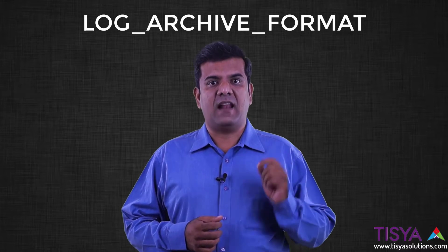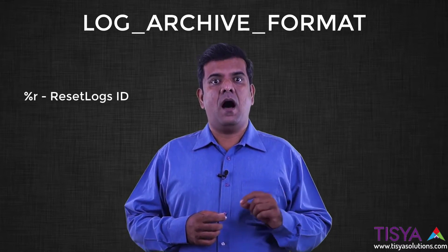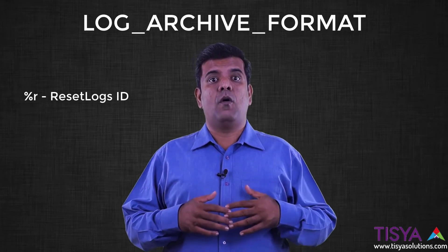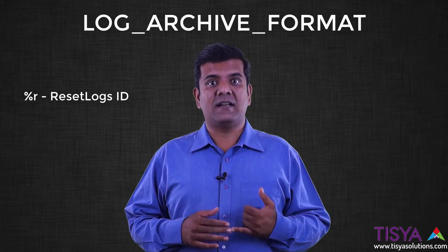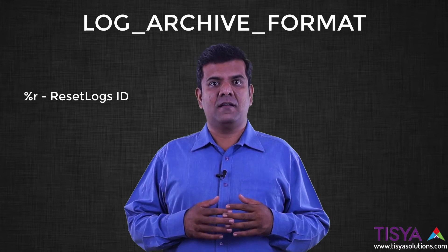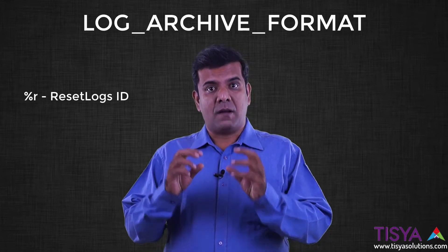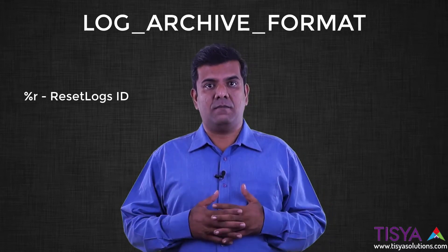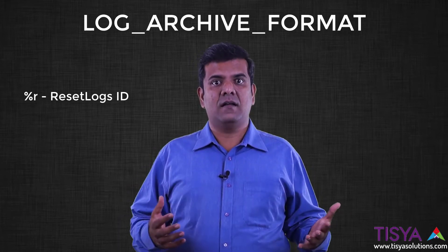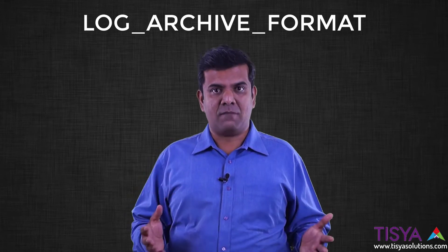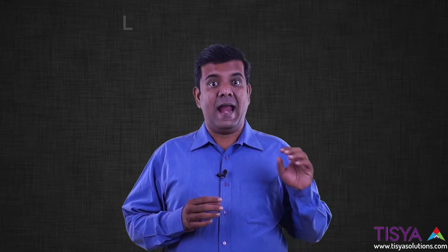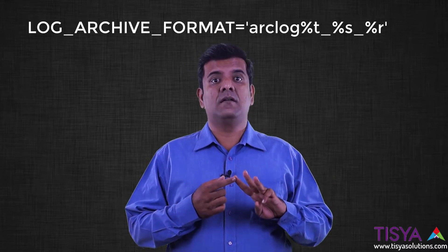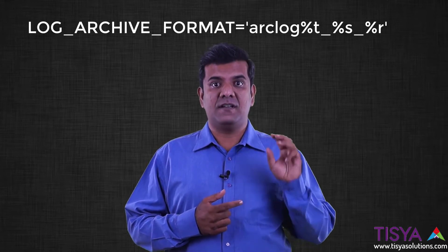We also have %a for activation ID, applicable in a Data Guard environment, and %d for database ID, which is uniquely generated when you create a database. Lastly, %r brings in the reset logs ID. Reset logs occurs when you open a database after point-in-time recovery, incomplete recovery, or when you duplicate a database — from that point the redo log sequence numbers restart from zero. Three components are mandatory in log_archive_format: sequence number, thread number, and reset log ID.